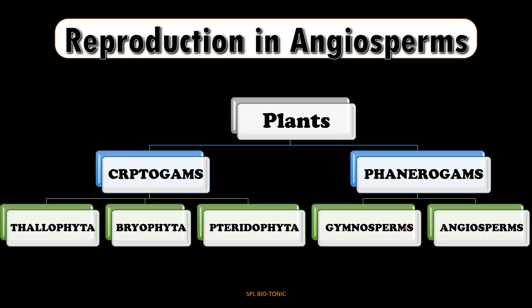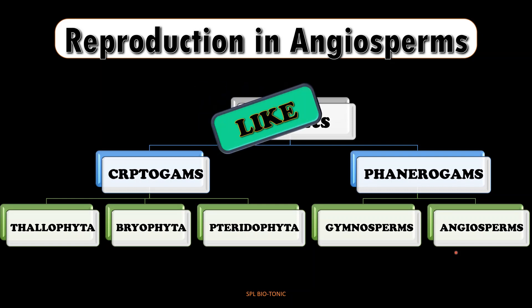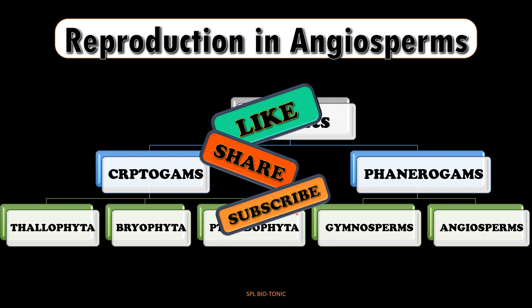Gymnosperms are the group of plants which produce seeds but fruits are absent. In angiosperms, the plant shows well-developed flowers, fruits, and seeds. In this video, we will talk about various parts of the flower. I request you all to please like and share this video and hit the subscribe button to get notifications of all my new videos.